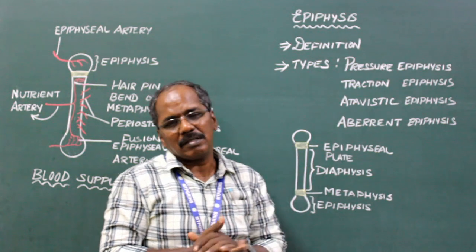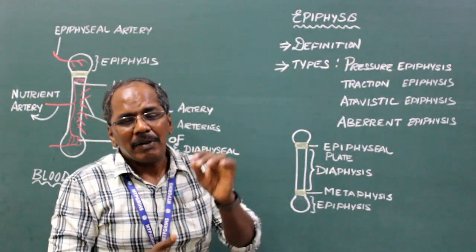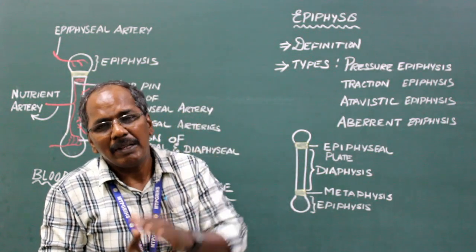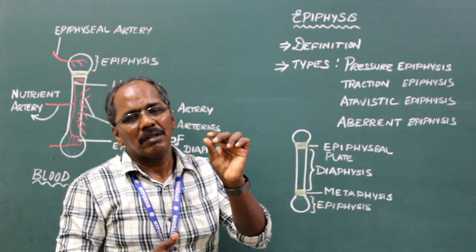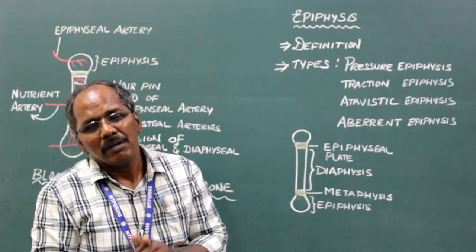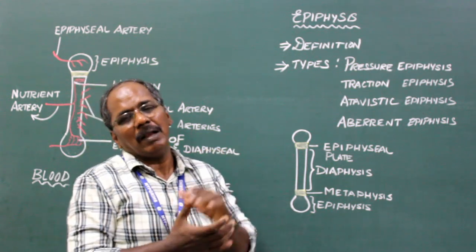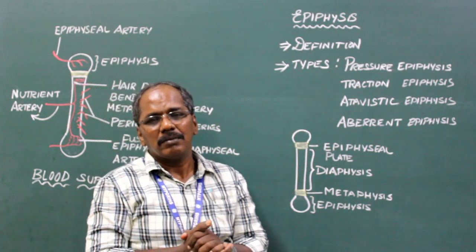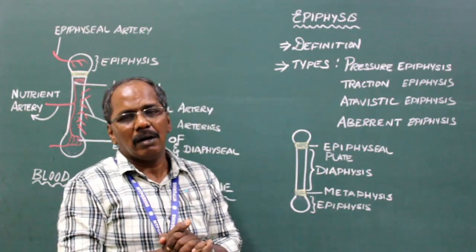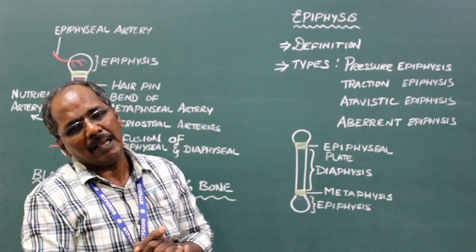Atavistic epiphysis represents phylogenetically an individual bone which is fused to another bone in humans. Examples: coracoid process of scapula, acromion, or lateral tubercle of talus.